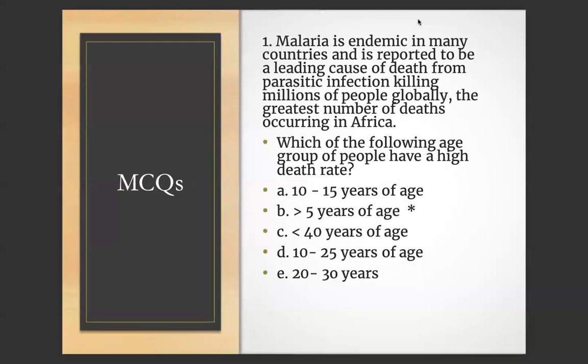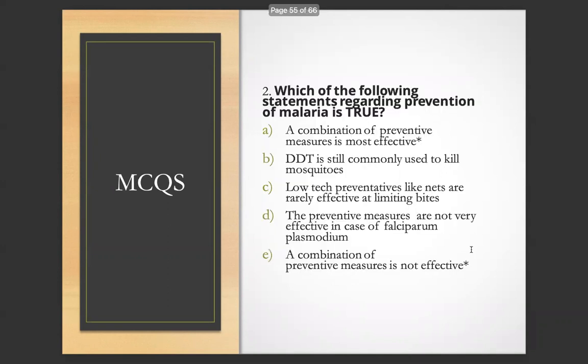MCQ 1: Malaria is endemic in many countries and is considered a leading cause of death from parasitic infection, killing millions globally, with the greatest number of deaths occurring in Africa. Which of the following age groups has a high death rate? A) 10–15 years, B) Less than 5 years, C) Less than 40, D) 10–25 years, E) 20–30 years. Answer: B — less than 5 years of age.